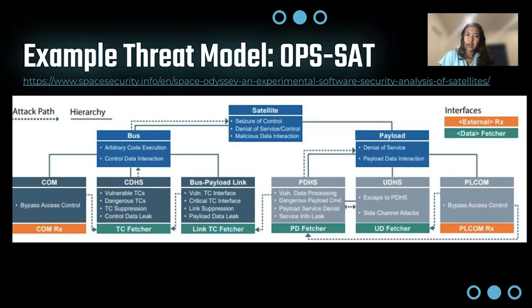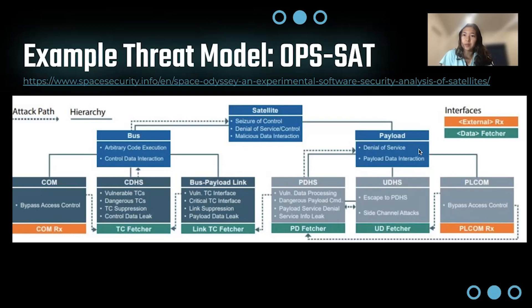I have an example threat model of the OPSAT, which we'll be covering further in the lab. You can see here they outlined pretty much every component of the satellite and walk you through a possible threat model using the attack path and a hierarchy structure. The satellite is broken up into two component categories: the bus of the satellite — the internal communication — and the payload, which includes things being uploaded to the satellite such as code and commands. The bus is vulnerable to arbitrary code execution and control data interaction. The payload is vulnerable to denial of service and payload data interaction. For the satellite overall, the main threats listed are seizure of control, denial of service, and malicious data interaction.